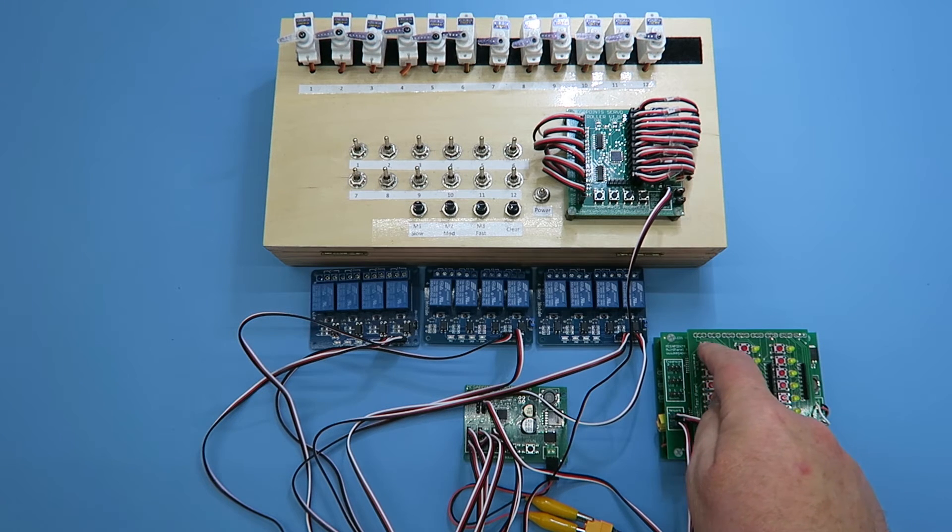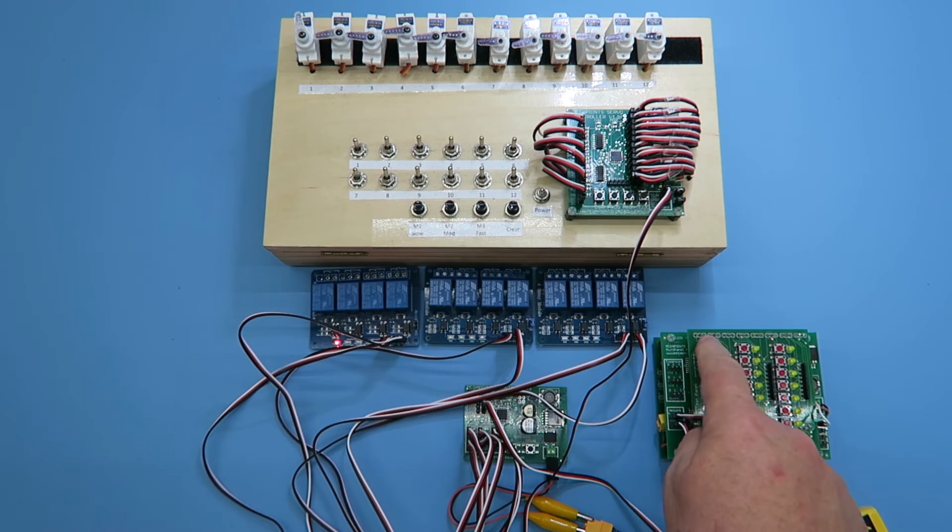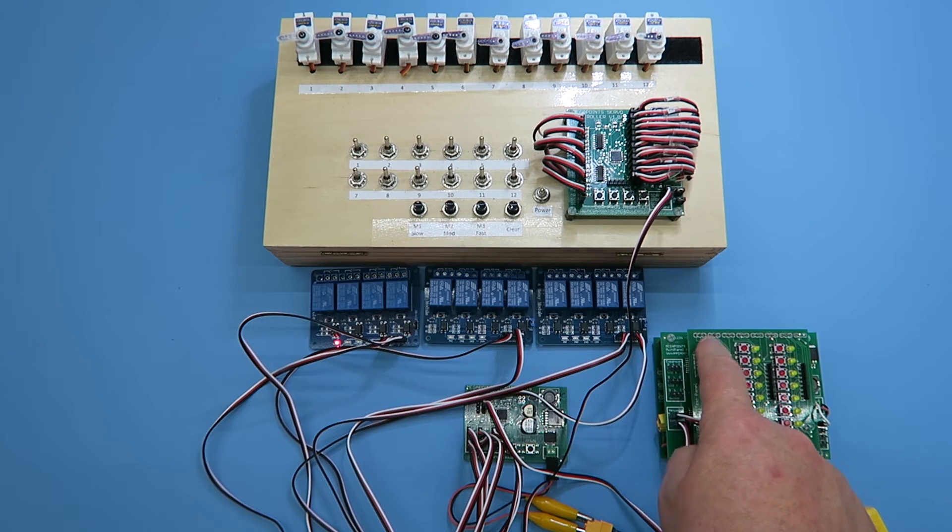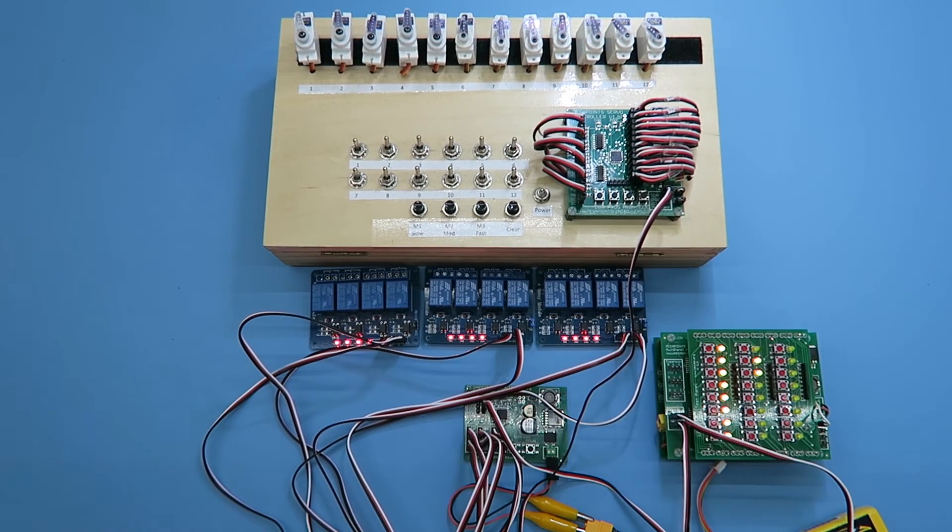So now as I turn a servo or a set of points you can see the corresponding relay is illuminating so it's giving me in this case frog polarity switching. There's 12.